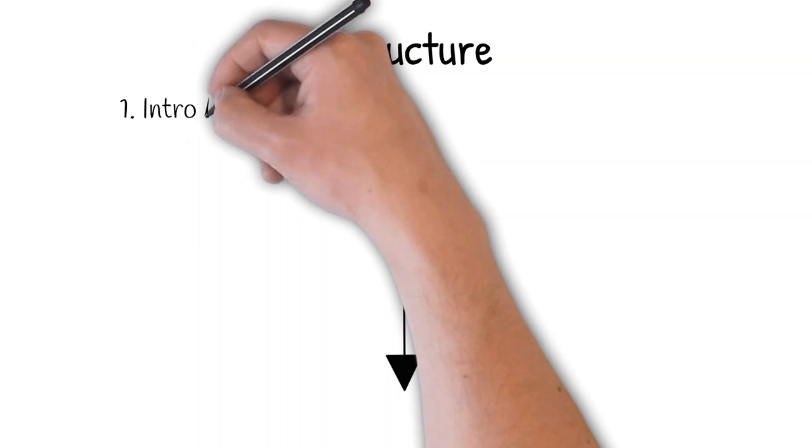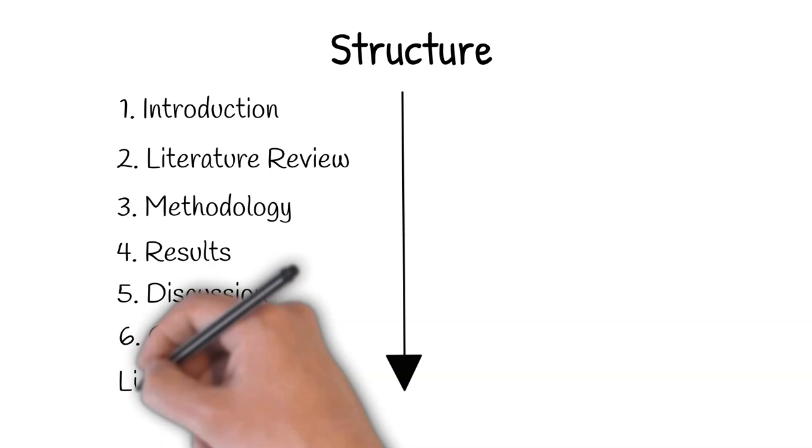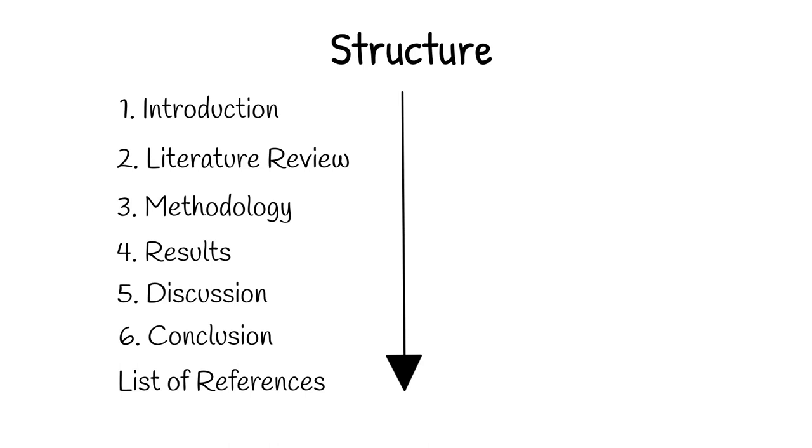They open with an introduction, and then they move through a literature review, a methodology section, a section that presents the results of the study, and then a discussion of the results. These elements are kept separate, so you would not normally find discussions of other people's work in the results section of such a paper. The advantage of such a structure is that readers know precisely what to expect, and they may not need to read the entire article.